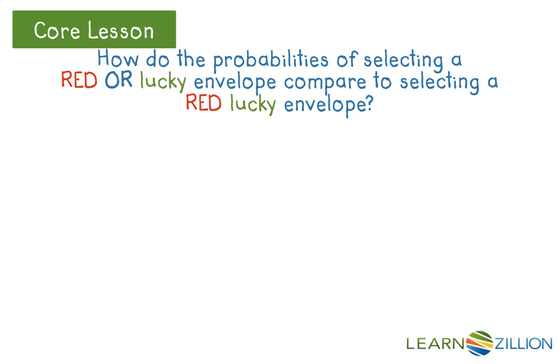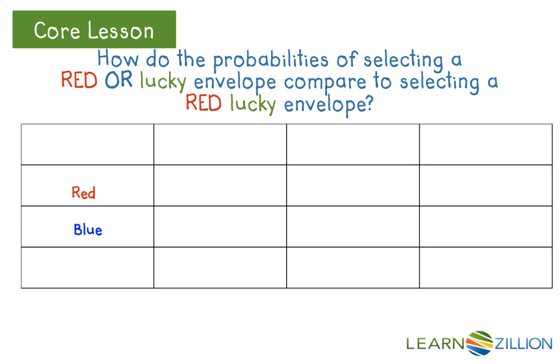How do the probabilities of selecting a red or lucky envelope compare to that of selecting a red lucky envelope? Here we see a two-way table with all of the outcomes possible in the lucky envelope game. The rows tell us the color of the envelope and the columns tell us what it contains.